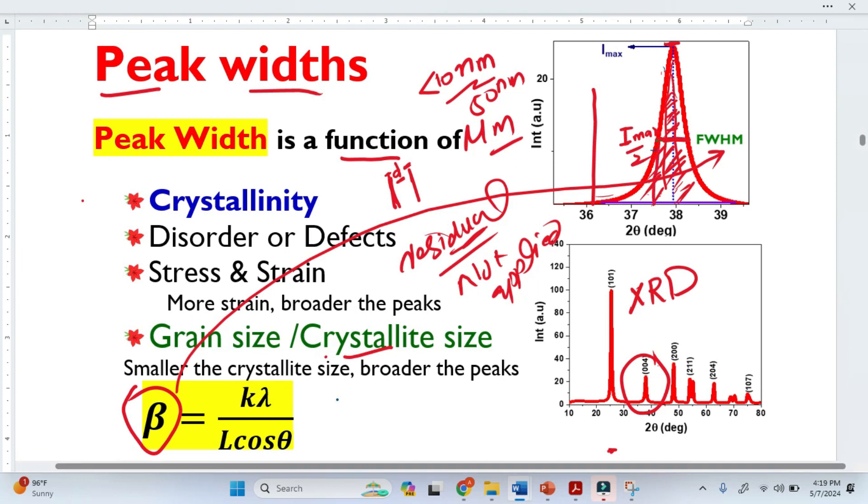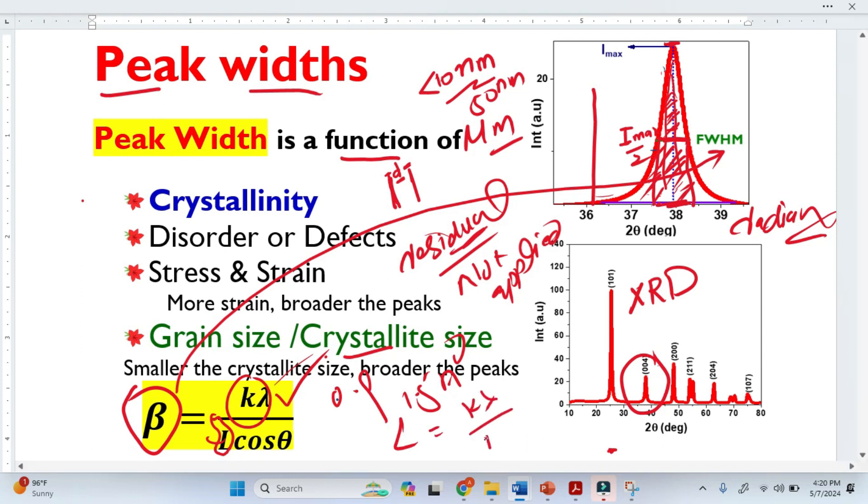You just draw a vertical line from here. And this area is basically your β, and it should be in radians. So this k is basically constant 0.9 value. And this λ is X-ray wavelength 1.54 angstroms. And this L is basically the crystallite size. So from here you can find the crystallite size like this: L = kλ / (β cosθ). Very easy, right?